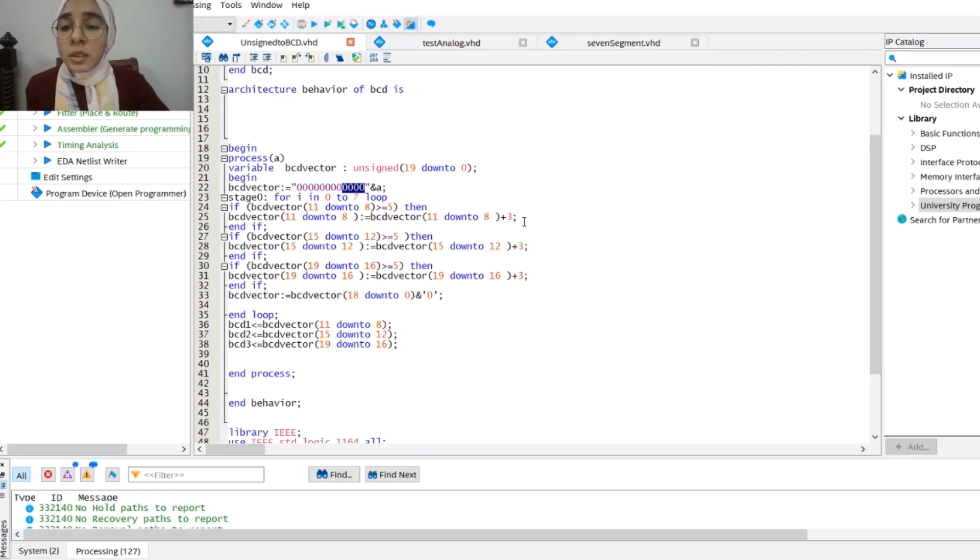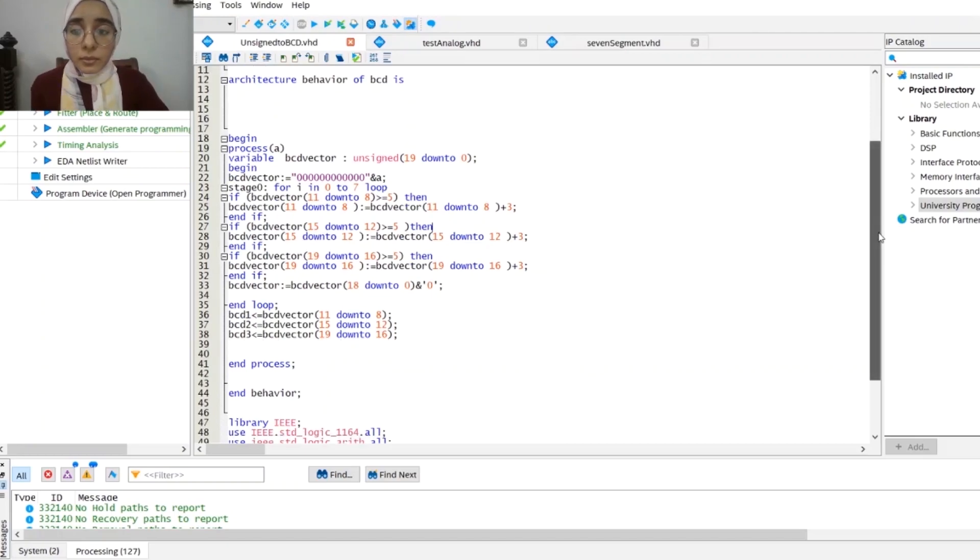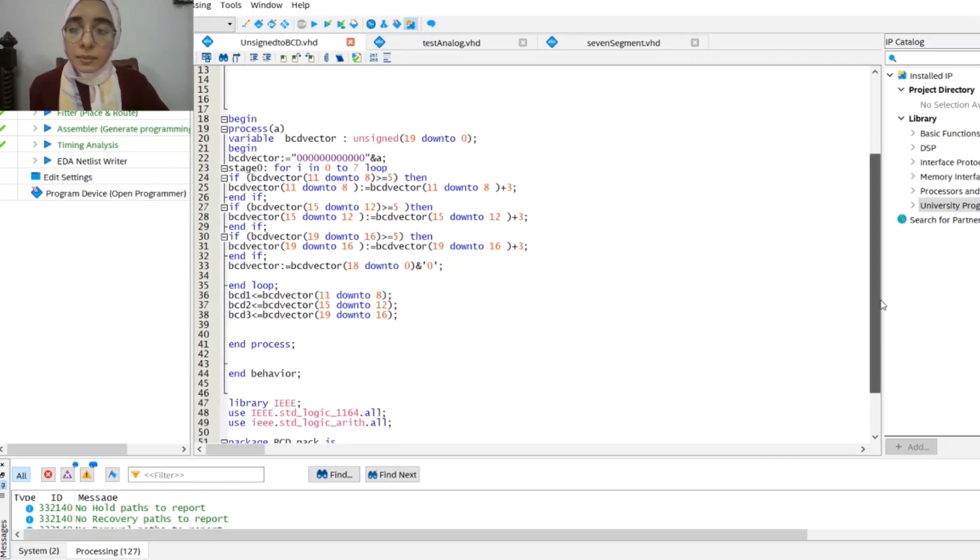Then we have the for loop, and inside the for loop we check the parts of the 12 bits. If any of them exceed the value five, we add three to that part, and then we shift our BCD variable one bit to the left. After the loop ends, we assign the units, tens, and hundreds to the corresponding output vectors.